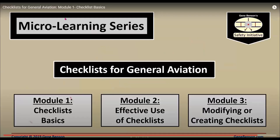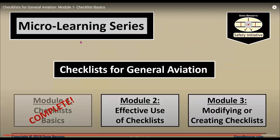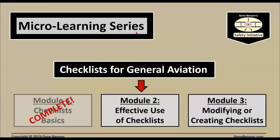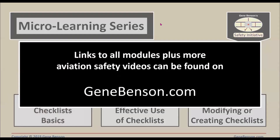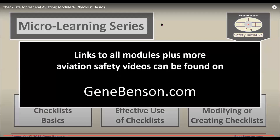Checklists must never get to the point where they interfere with flying the airplane. But that brings up a criticism of using checklists — or perhaps an excuse not to use them at all. We will explore that and learn more about the effective use of checklists in the next module. We have completed Module 1, Checklist Basics. Links to all the modules plus more aviation safety videos can be found on GeneBenson.com.